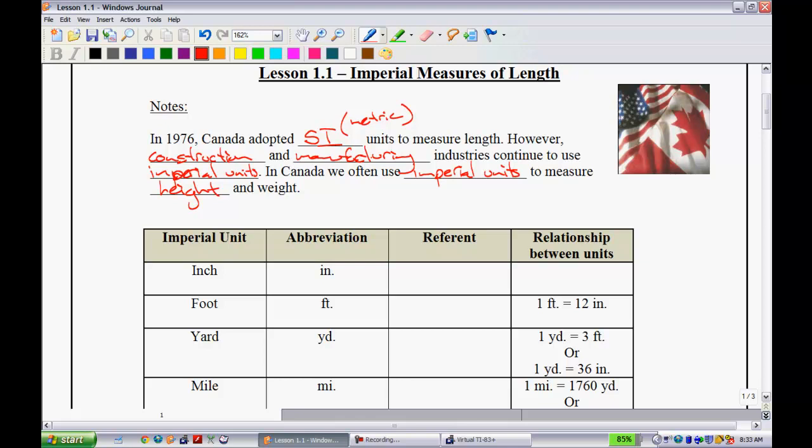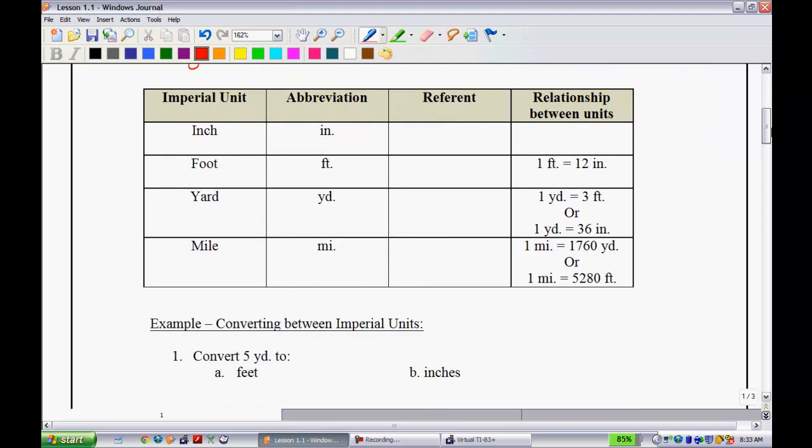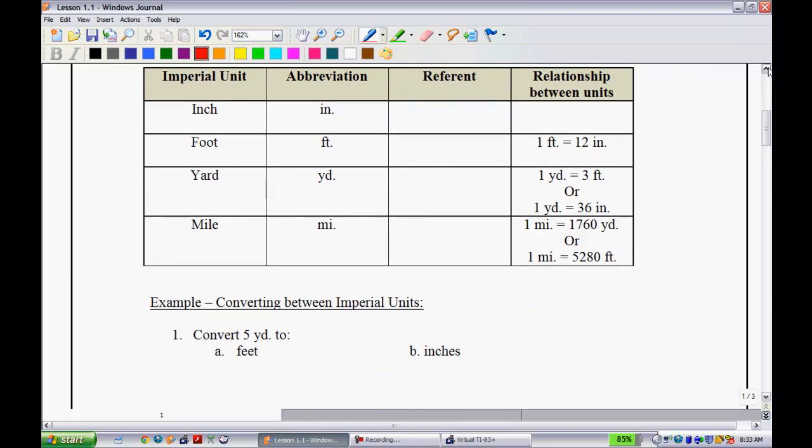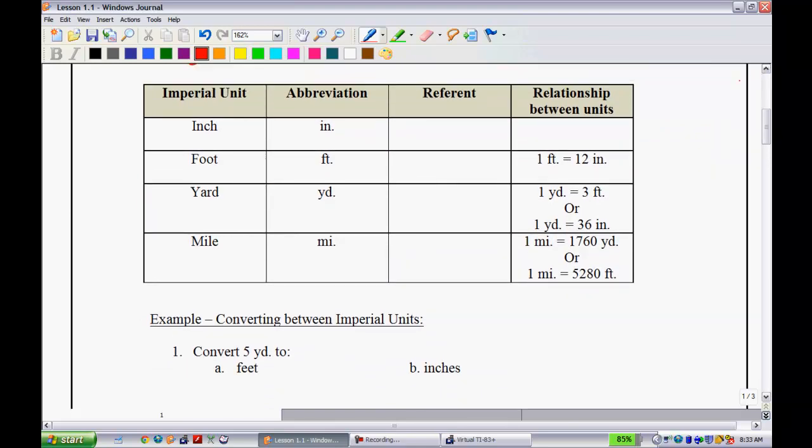This first table is going to be a table that you guys are going to have on your formula sheet, and I just want to work with you to fill it out. What I have here is the imperial units on the left-hand side: inch, foot, yard, mile, the abbreviation, and the next thing we have is a referent. A referent is something that's used to basically estimate.